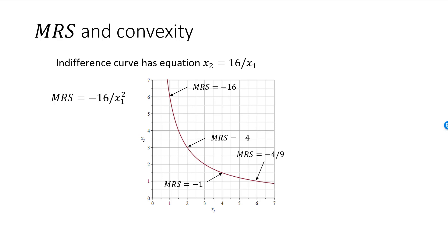Well, that makes sense since she has a lot of good 2 but very little of good 1. As we move along the indifference curve down and to the right, the absolute value of MRS decreases.